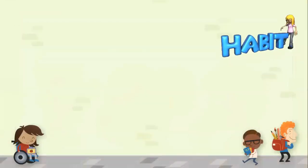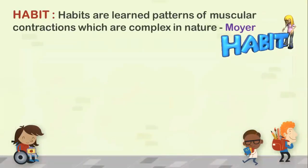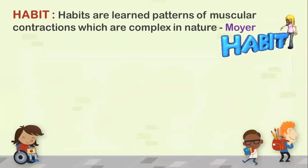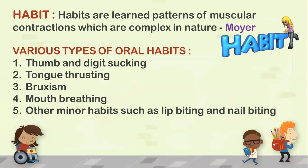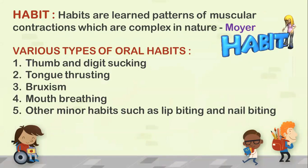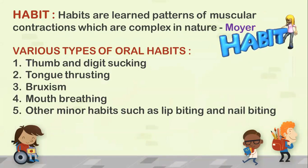Regarding habits, as defined by Moyer, habits are learned patterns of muscular contraction which are complex in nature. The various types of oral habits are tongue thrusting, thumb and digit sucking, bruxism, mouth breathing, and other minor habits such as lip and nail biting.